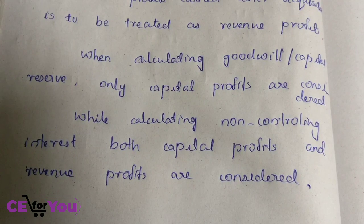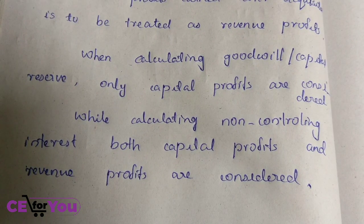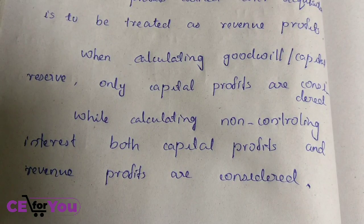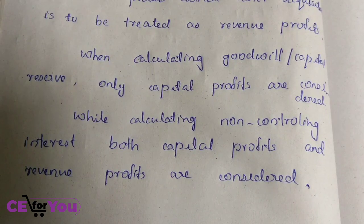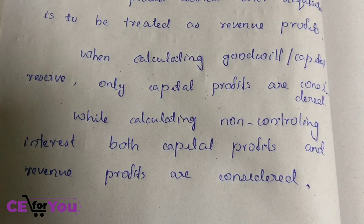In the non-controlling interest calculation, we consider both capital profit and revenue profit. We consider these three differences in the problem solving. Let us now understand what capital profit and revenue profit are.